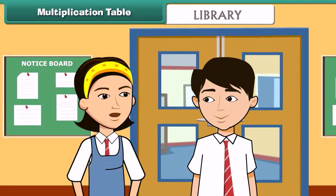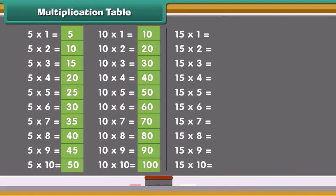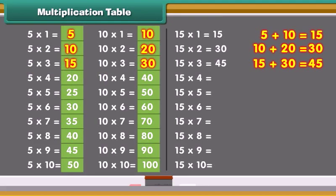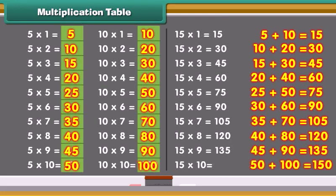I do not know the multiplication table of 15. But we can make the table of 15 with the help of the tables of 5 and 10. Look at the tables of 5 and 10. Now add the two numbers in the green boxes, and we get the table of 15.